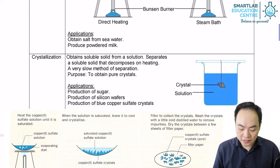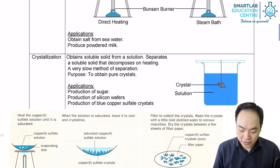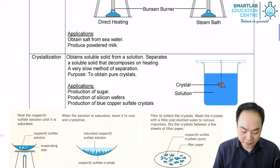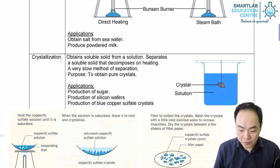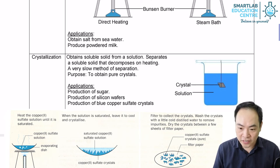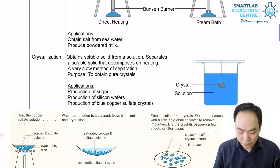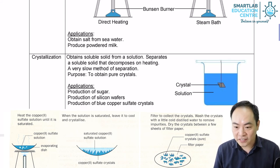Crystallization is a very important application in the production of sugar. The sugar crystals can be obtained from the sugar cane by the crystallization process. The process is also useful in the production of silicon. Silicon is the main component in the manufacturing of many electronic devices, such as computers, radio, telephones, and many other devices.